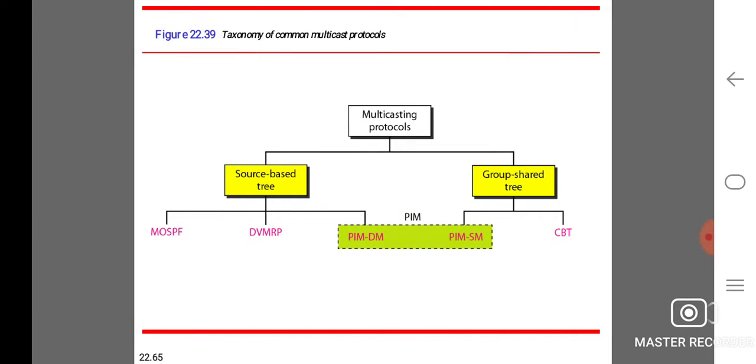Taxonomy of common multicast protocols: source-based tree and group-shared tree. For source-based tree: MOSPF, DVMRP, and PIM-DM. For group-shared tree: PIM, which is classified into PIM-DM and PIM-SM, and CBT.